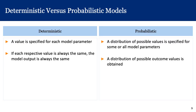An important distinction is between deterministic and probabilistic models. The models we are discussing today are deterministic, meaning there is a straightforward equation, a value is specified for each model parameter, and if each value is the same the model output will also be the same. Later in the course we will discuss probabilistic models, where instead of one value per parameter we provide a distribution of values, and the model produces a distribution of possible outcomes.